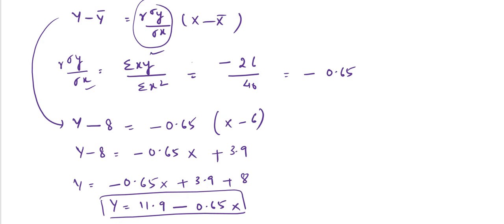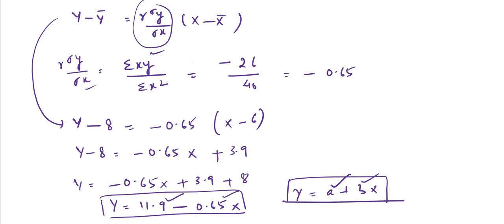Setting this in the form y = a + bx: here a = 11.9 and b = −0.65. This is how we find the regression equations using the arithmetic mean method. When mean of x and y are in round figures, use this method. If arithmetic mean comes in fractions, use the assumed mean method, which we will see in the next video. Thank you.